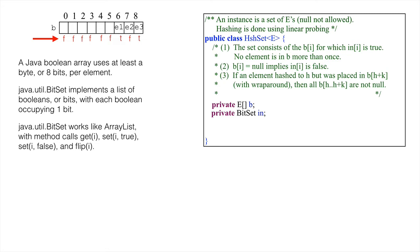If an element hashes to h but was placed in b[h+k] with wraparound, of course, then all elements b[h]...b[h+k] are not null.